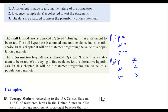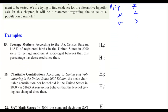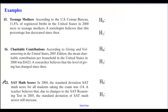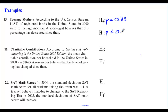Let's set up a couple of these. For number 15: according to the U.S. Census Bureau, 11.8% of registered births in the United States in 2000 were born to teenage mothers. A sociologist believes this percent has decreased since then. So H-naught is P equals 0.118, and since the sociologist believes it has decreased, the alternative hypothesis H-one is P less than 0.118.